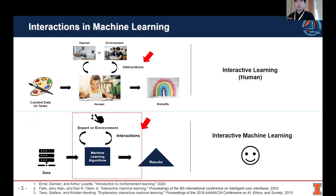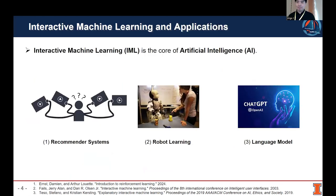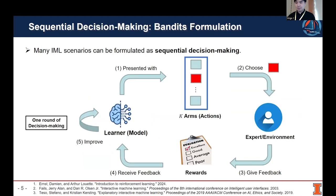Therefore, interactive machine learning has emerged at the core of artificial intelligence, and it has wide applications such as recommender systems, robot learning, language models, and so on. Many interactive machine learning scenarios can be effectively formulated as a sequential decision-making process, where each interaction represents a round of decision-making. Here we use the framework of multi-arm bandits to formulate this scenario.